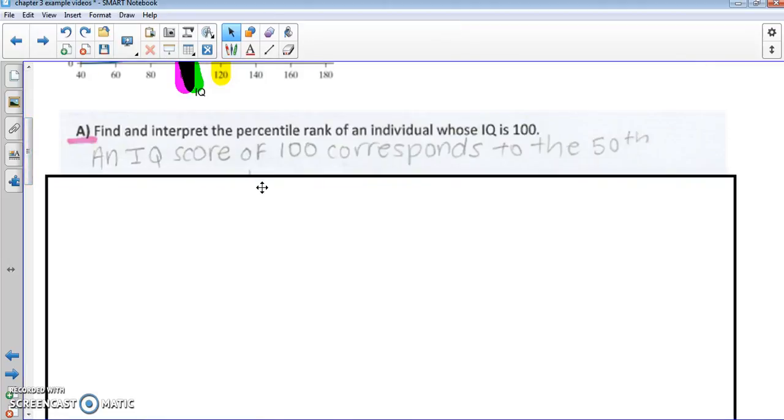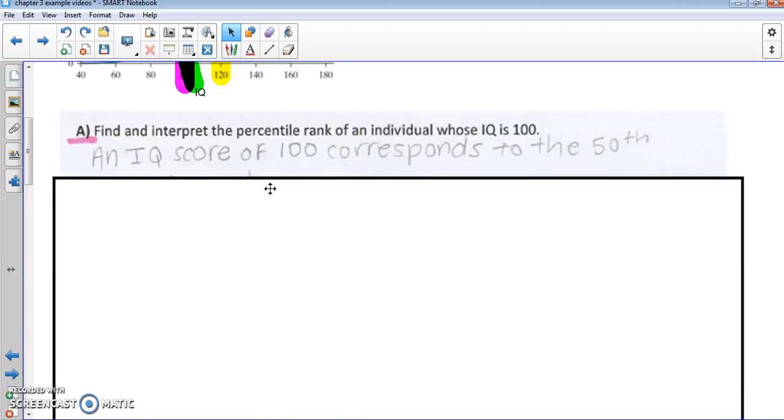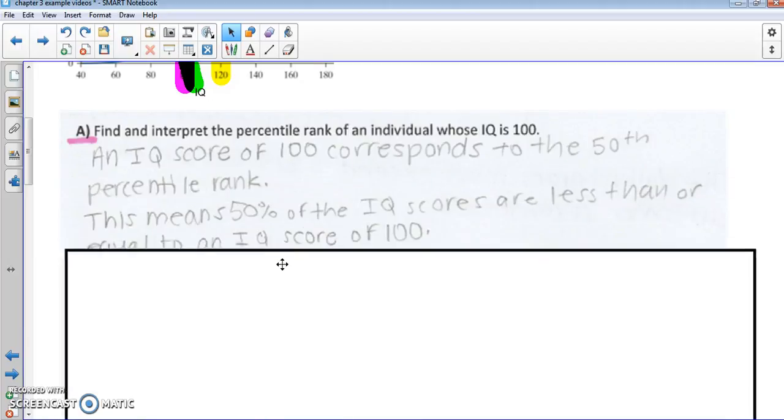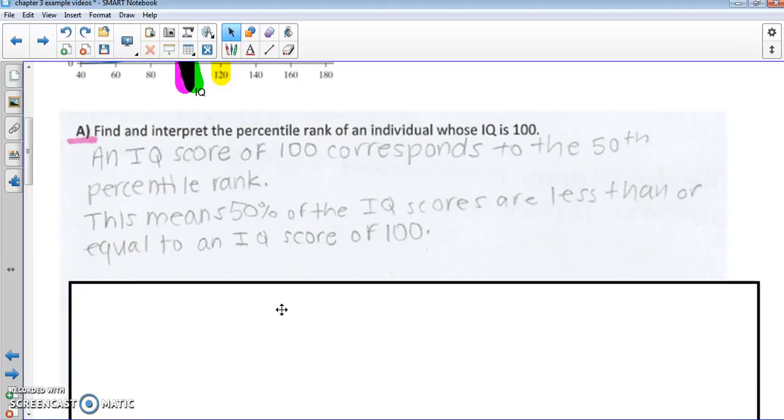So for part A, we have that an IQ score of 100 corresponds about to the 50th percentile rank. So what does that mean? So this means that 50% of the IQ scores are less than or equal to, so this key thing with percentiles is that, so it's less than or equal to an IQ score of 100.